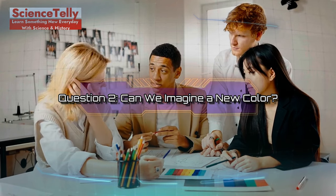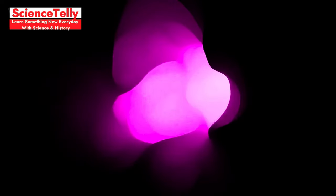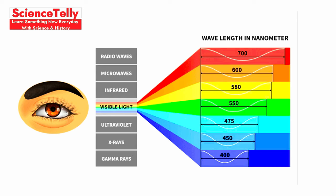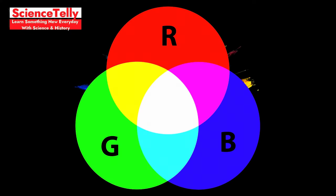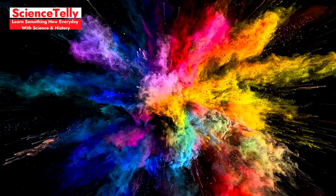Question 2. Can we imagine a new color? Let's tackle this mind-bending question. Can we imagine a brand new color? Our eyes and brains are set up to see colors within a specific range, known as the visible spectrum. This includes colors like red, blue, and green, which combine to create all the shades we can see. Because of this, we can't really invent a new color outside this range. Our eyes just aren't built to see it.